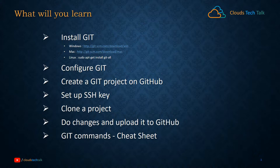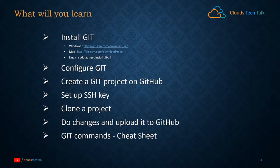Then we will set up an SSH key between your local system and the GitHub repository. If you make any changes in your local repository, commit them, and then you can easily upload all your local changes into the GitHub cloud-based repository. After that, we will create a GitHub project, clone the entire project into your local system, make some changes, commit them, and upload all the changes to the GitHub repository. I'll also provide you a Git commands cheat sheet.